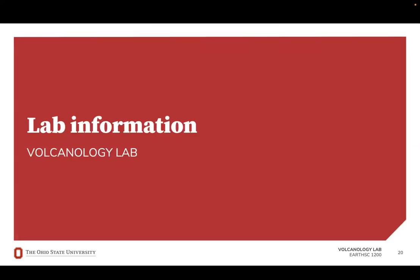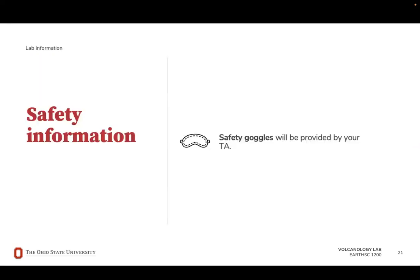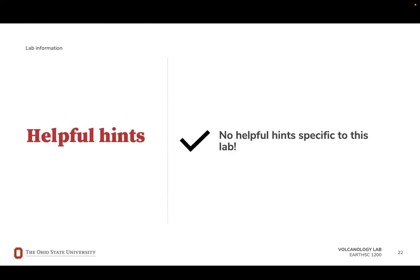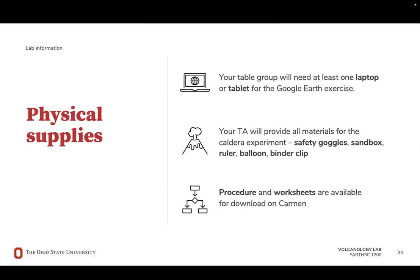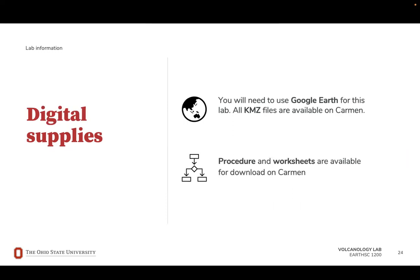Next, we'll discuss information that you'll need to complete this lab. You'll need safety goggles that will be provided by your TA. Your table group will need at least one laptop or tablet for the Google Earth portion of this exercise. Your TA will provide all materials for the caldera experiment, including safety goggles, the sandbox, a ruler, a balloon, and a binder clip.